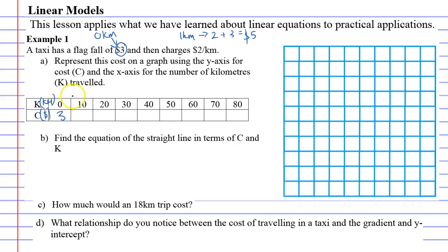If I traveled 10 kilometers, because they charge $2 per kilometer, I times that by 2 and add the flag fall on at the end, add the $3. 10 times 2 is 20 plus 3, equals 23. If I travel 20 kilometers, I do 20 times the $2 per kilometer plus the flag fall, which is 43. Each time I'm going to multiply by 2 and add 3. So 63, 83, 103, 123, 143, and 163.